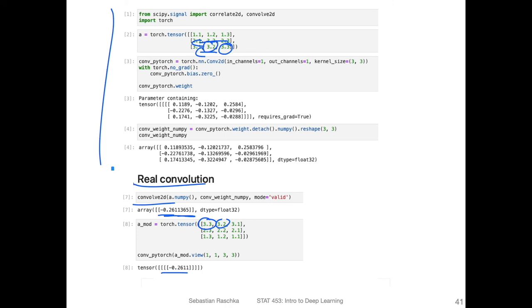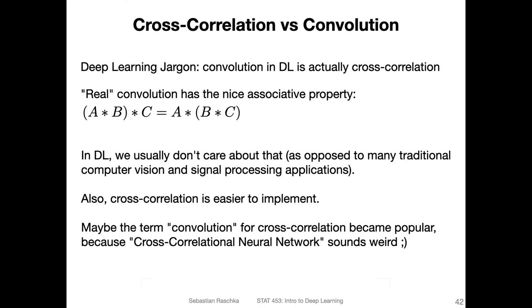So why does it even matter? I mean, I was just highlighting the difference between the two operations. Yeah, in practice, it does not really matter, at least not in deep learning. So maybe in traditional or in other fields of computer vision and signal processing, it's actually useful to have this associative property of the real convolution. But in deep learning, to be honest, that doesn't really matter. And I think cross-correlation is easier to implement, especially for the backward pass. But we don't worry about the backward pass. I will explain a little bit about the backpropagation in the next video. But that is usually automatically handled in PyTorch. It's maybe like a small efficiency reason.